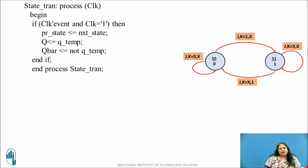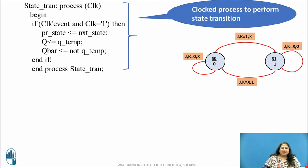After the begin of the architecture, a clocked process is used where at the active edge of the clock, the next state value is assigned to the present state — that is, state transition takes place. This is the state register part of the FSM. When the clock event takes place and clock becomes 1, that is at the rising edge of the clock, next state is assigned to the present state. In the Moore model, the output is also modified at the active edge of the clock.